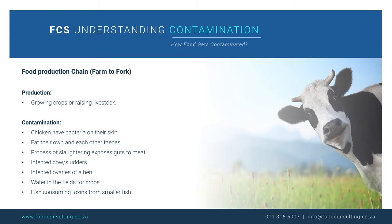Chicken can carry many different bacteria that is carried on the skin or in the gut. Bacteria are known to eat their own and their flock's feces, which allows the bacteria to spread throughout. During the slaughtering process, incorrect washing of the chicken can cause the contamination to transfer to meat. Infected udders of a cow can transfer to the milk, making unpasteurised milk products very high risk.